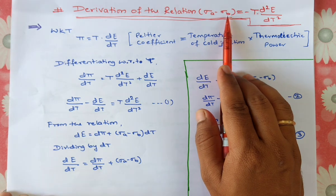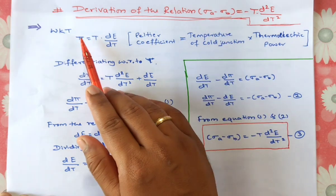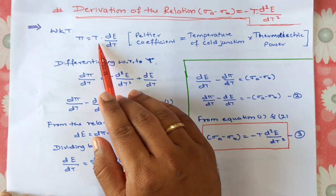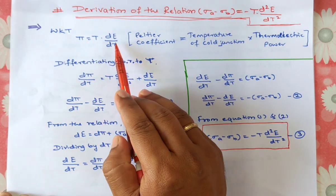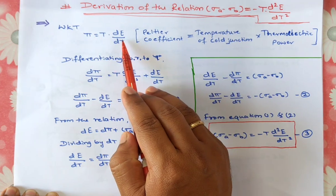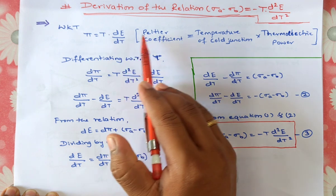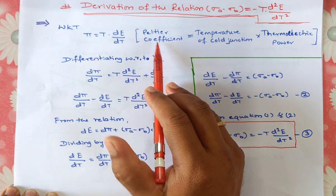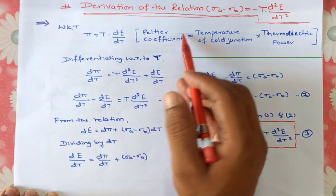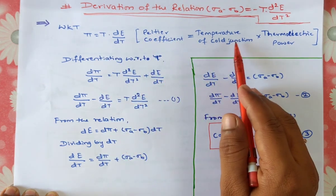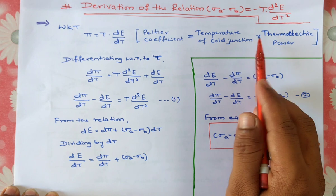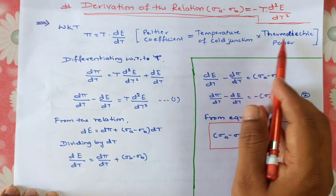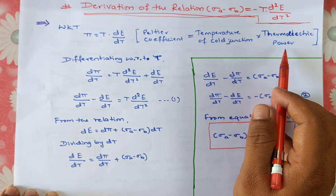We already know that the relation pi is equal to t into d e divided by dt. This pi is nothing but the Peltier coefficient, equal to the product of the temperature of the cold junction and the thermoelectric power.